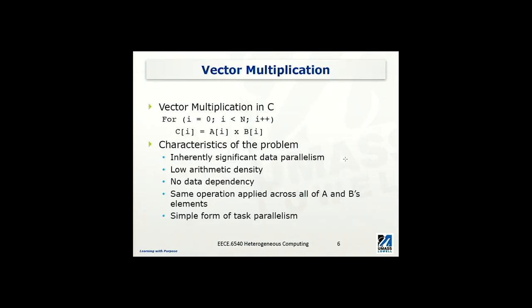Now let's look at the next example. This is vector multiplication. Vector multiplication is different from the dot product we just saw earlier. This is sometimes called element-wise multiplication. So what we are doing here is, given two vectors A and B, each has N elements in it, and we're going to do element-wise multiplication and assign the result into a new vector C. Now looking at this problem, there are several important features or characteristics of such problems.